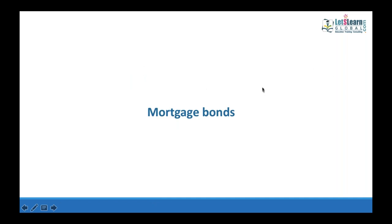Mortgage bonds: some asset of the company will be given as collateral. For example, if a company has $1 million worth of real property — a building or land — and wants to raise $600,000, it issues 6,000 bonds of $100 each. These bondholders are given assurance against that land, meaning the land is notarized in the name of the 6,000 bonds.